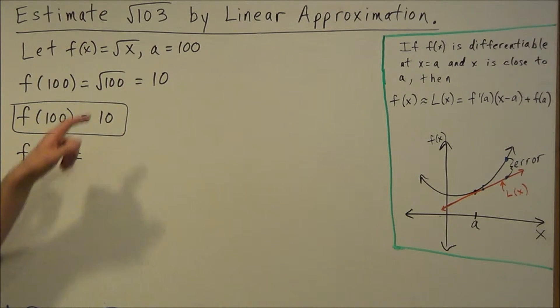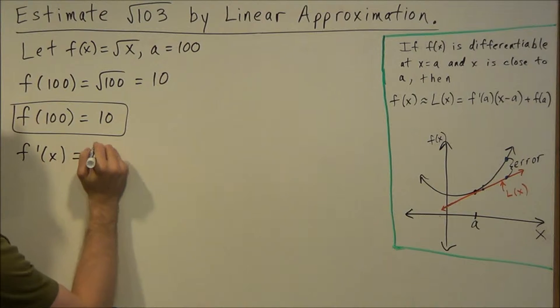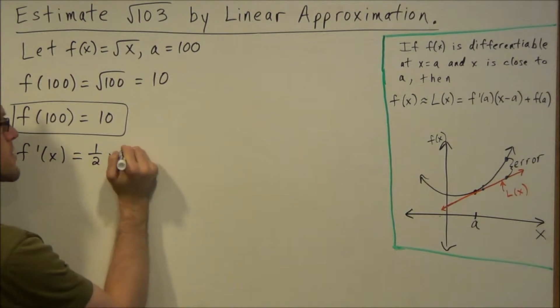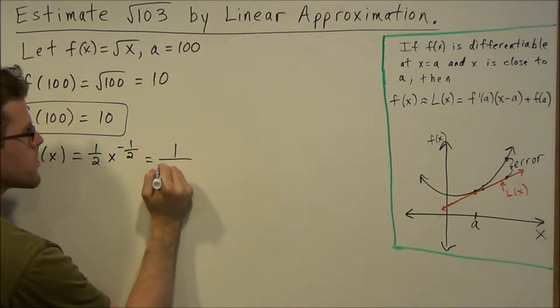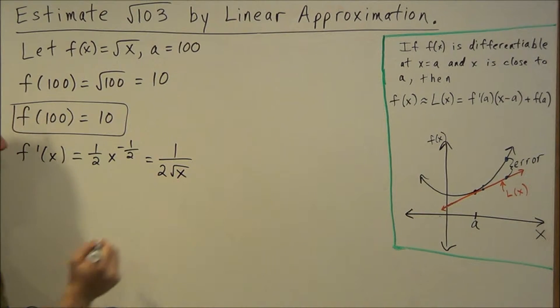if we think of this as x to the one half power, is going to equal one half times x to the negative one half, which we can rewrite as 1 over 2 radical x.